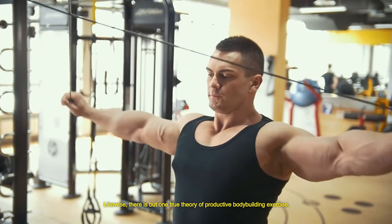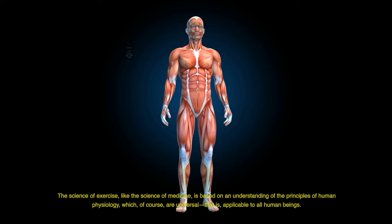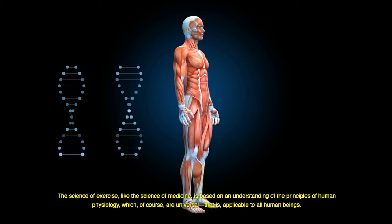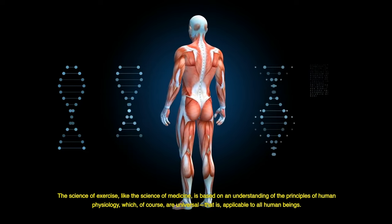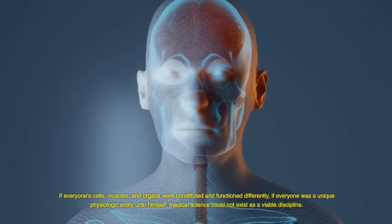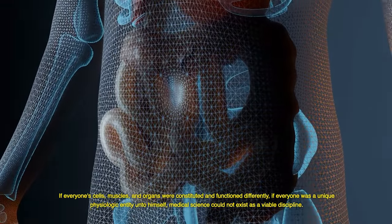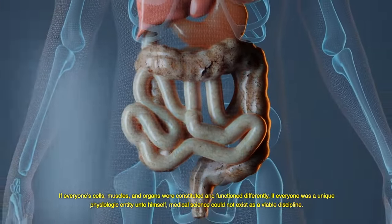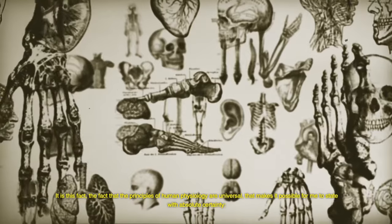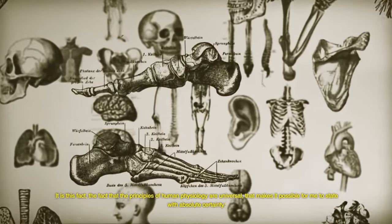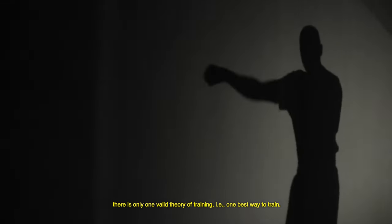Likewise, there is but one true theory of productive bodybuilding exercise, and it just so happens to be the theory of high-intensity training. The science of exercise, like the science of medicine, is based on an understanding of the principles of human physiology, which are of course universal, that is applicable to all human beings. If everyone's cells, muscles, and organs were constituted and functioned differently, if everyone was a unique physiologic entity unto himself, medical science could not exist as a viable discipline. Doctors couldn't make diagnoses, perform surgeries, or dispense medicines. It is this fact, the fact that the principles of human physiology are universal, that makes it possible for me to state with absolute certainty there is only one valid theory of training, i.e. one best way to train.